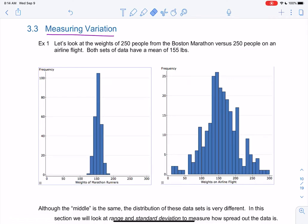Alright, let's check out section 3.3. So far we've measured the center of a graph. Now we want to see what's going on in the rest of the graph, and so that's going to be measuring variation.